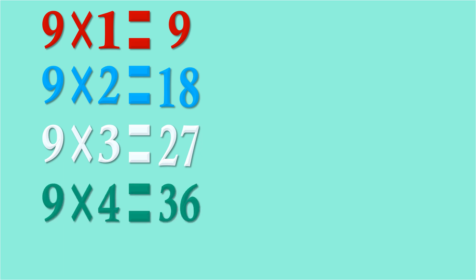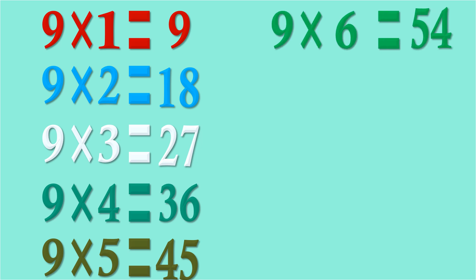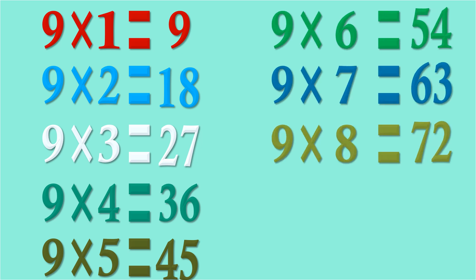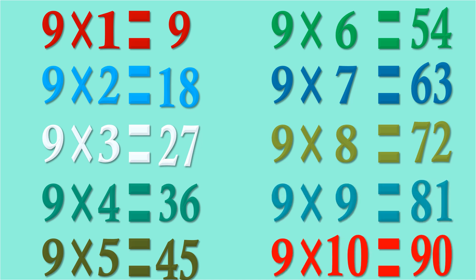9 fours are 36, 9 fives are 45, 9 sixes are 54, 9 sevens are 63, 9 eights are 72, 9 nines are 81, 9 tens are 90.